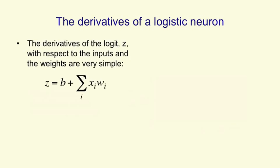The logit is just a bias plus the sum over all the input lines of the value on the input line times the weight. So when we differentiate with respect to wi, we just get xi. So the derivative of the logit with respect to wi is xi, and similarly, the derivative of the logit with respect to xi is wi.